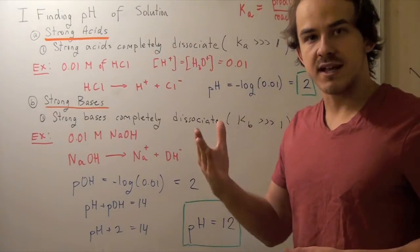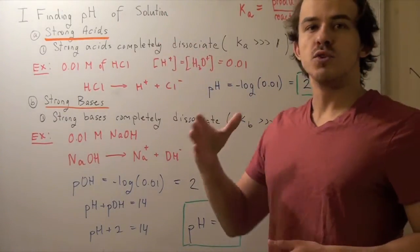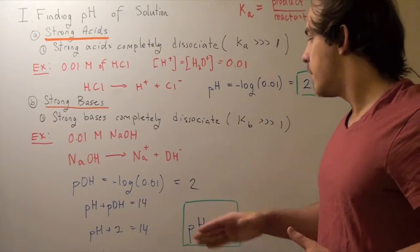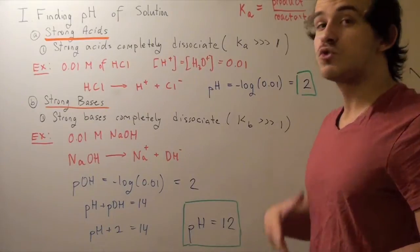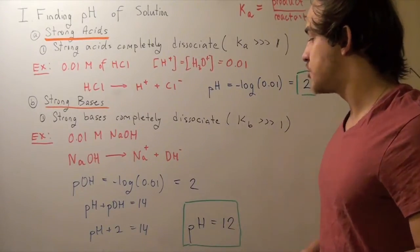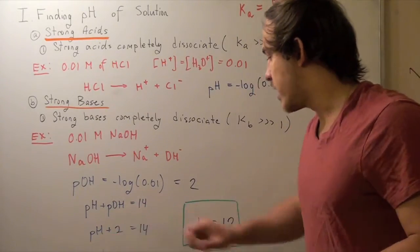our pH should be high. We should have a basic pH. But a 2 is clearly an acidic pH. So something is wrong. What's wrong is that we have to convert pOH to pH in this way here.